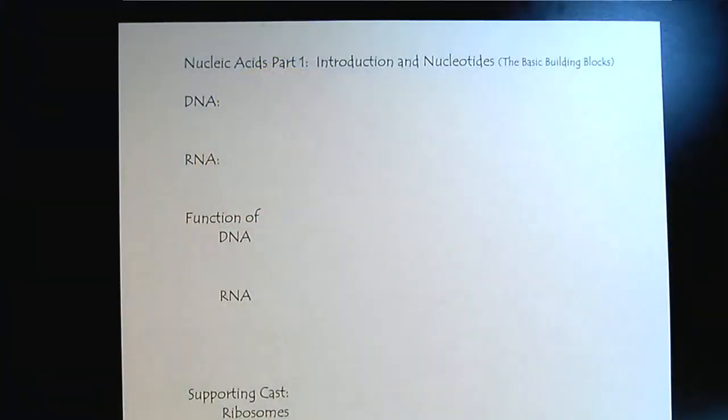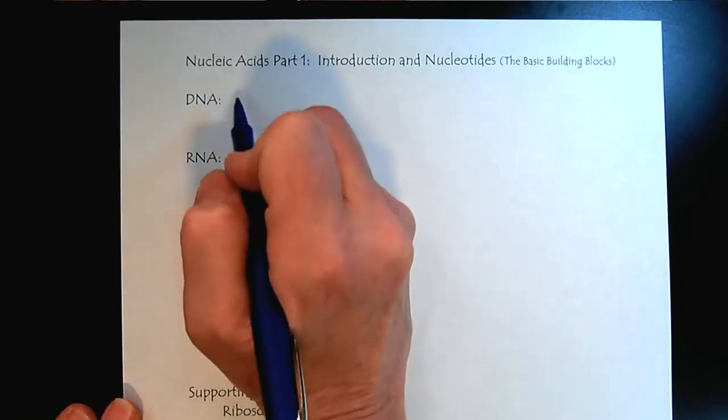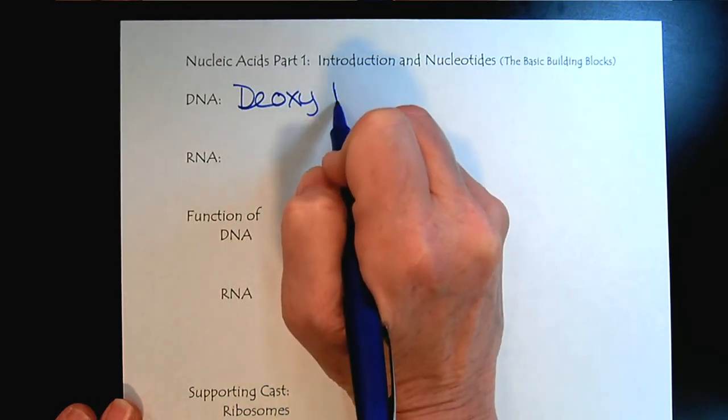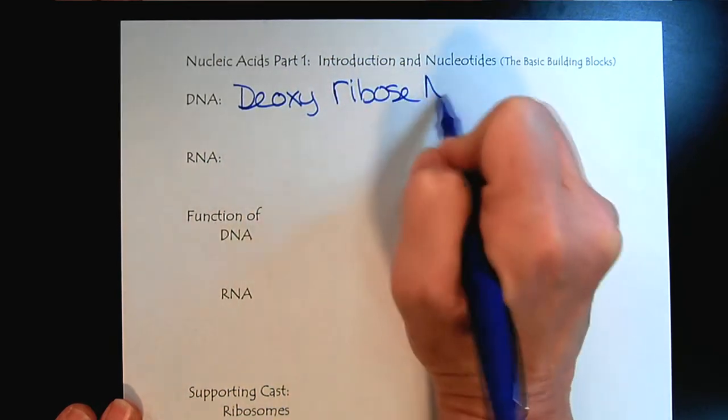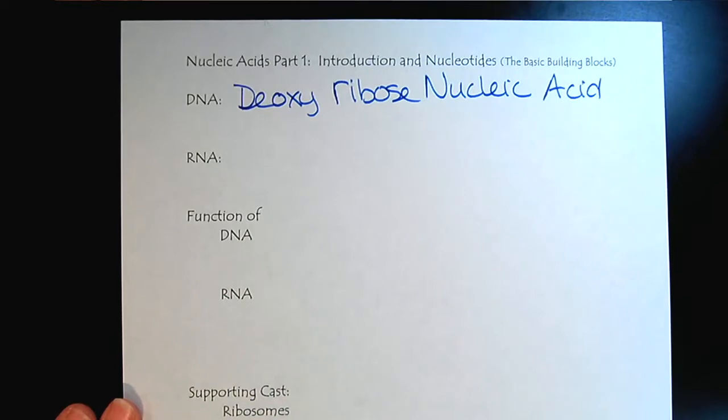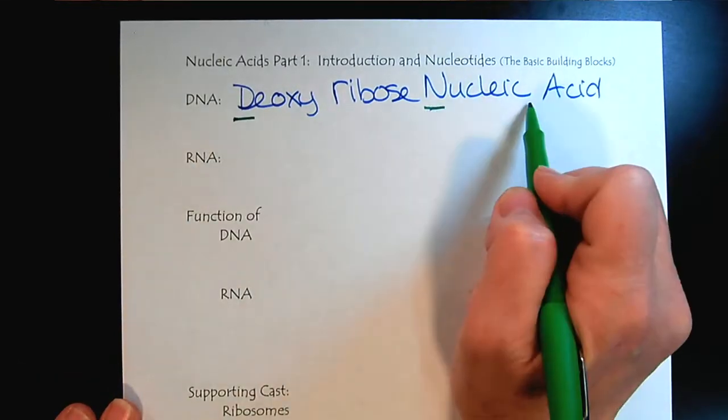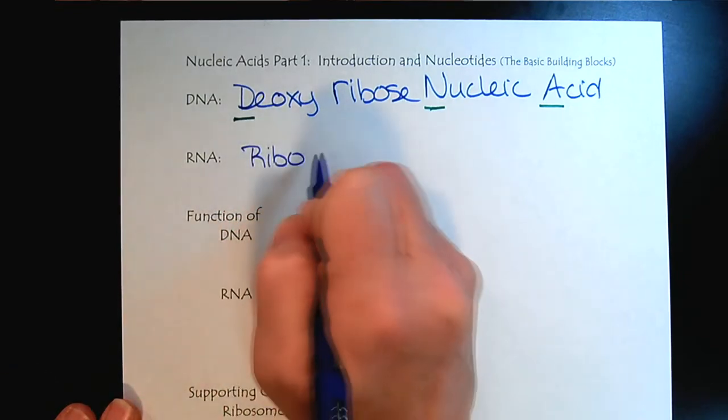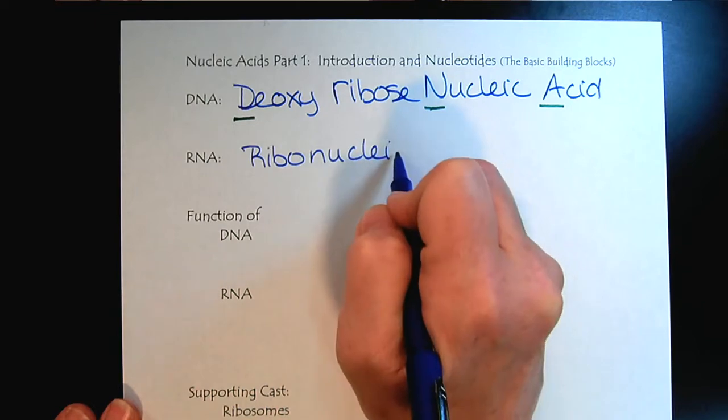Welcome to Nucleic Acids Part 1. We'll have a brief introduction and we'll look at nucleotides, the basic building block of nucleic acids. Let's go ahead and get started. As you may or may not already know, DNA is deoxyribose nucleic acid, and RNA is ribonucleic acid.